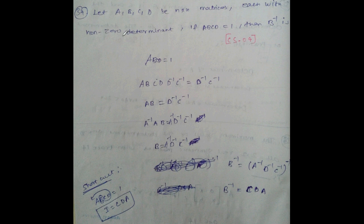Let A, B, C, D be N×N matrices each with non-zero determinant. If ABCD = I, find B-inverse (Computer Science 2004). Long method aside, here is a shortcut: rearranging the equation ABCD = I in clockwise/anti-clockwise direction, B-inverse equals C times D times A. So the answer is B⁻¹ = CDA.